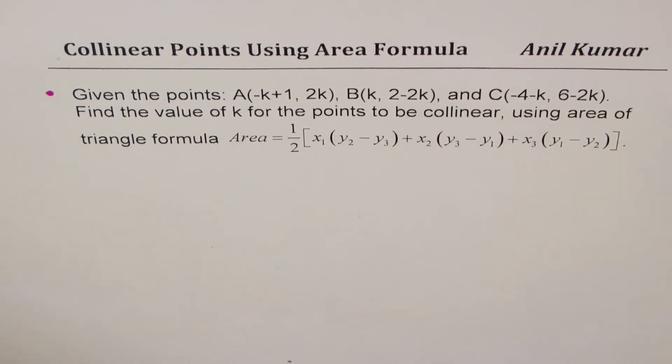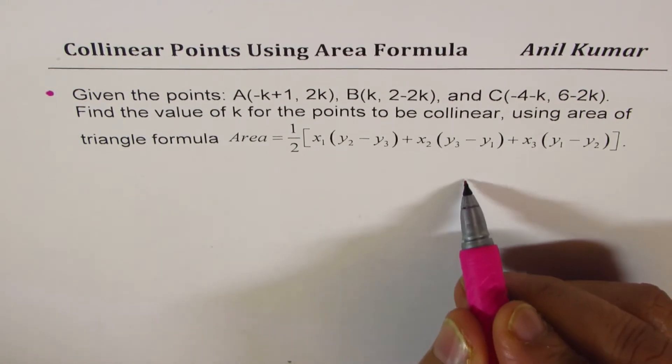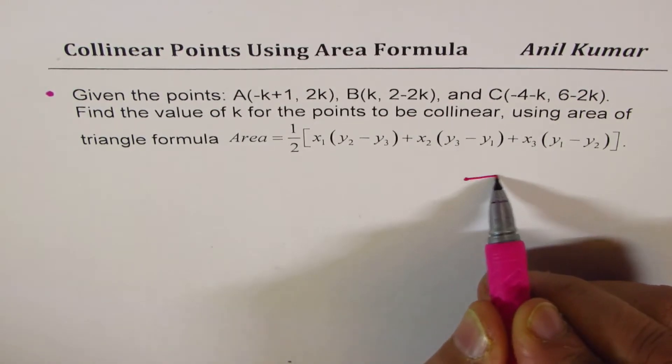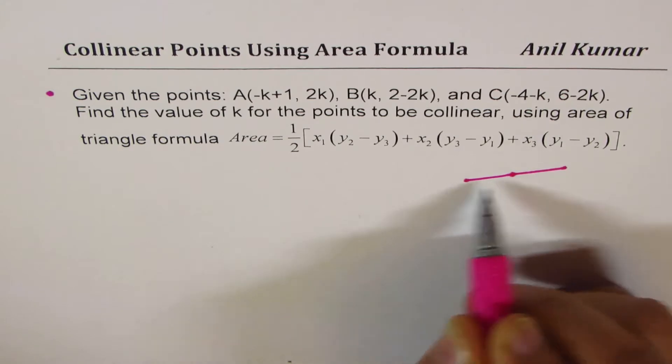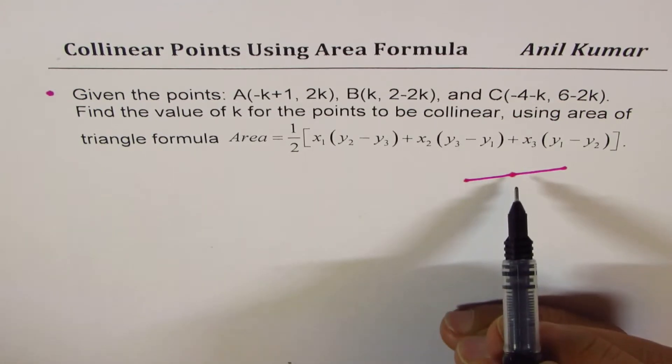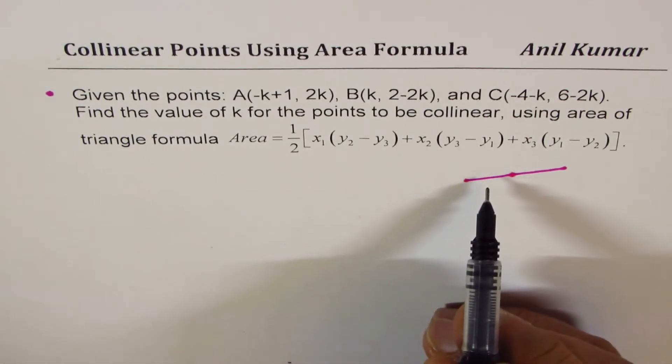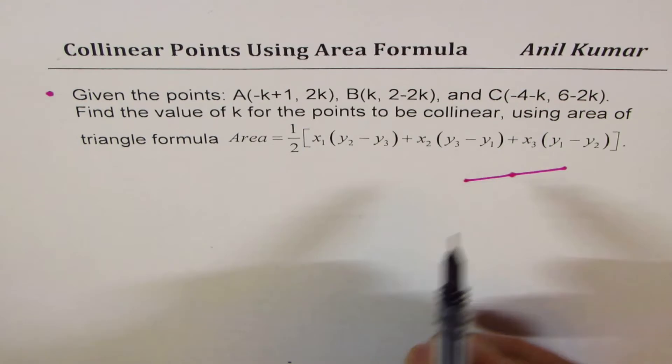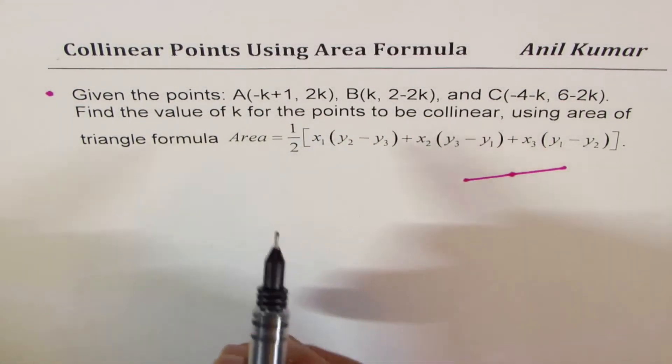Now if the points are collinear, that means the area should be 0, right? So if I have three points which are along the same line, in that case area should be 0. Height is 0 of this triangle.